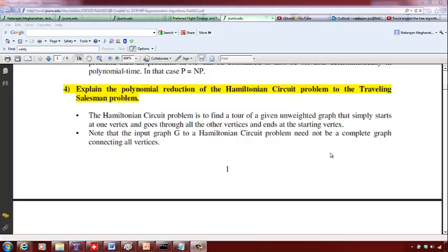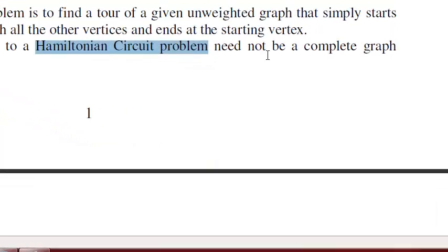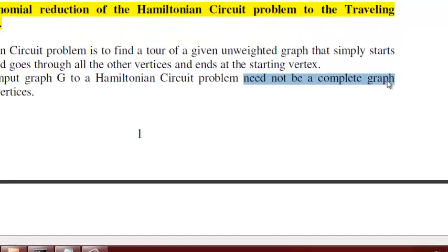Hello students. Now we are going to look at the polynomial reduction for the Hamiltonian circuit problem to the traveling salesman problem. A Hamiltonian circuit is basically a tour that starts with one vertex, goes around all the vertices, and comes back to the starting vertex. The Hamiltonian circuit problem can be run on any graph — the graph need not be a complete graph. In a complete graph, each vertex has to be connected to all the other vertices.